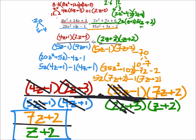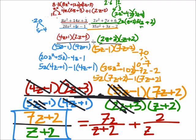So, yeah, so this would split up into 7z over z plus 2. See, there's nothing to really simplify there. And same with the 2, 2 over z plus 2. So, yeah, that doesn't really help us in terms of simplification. In fact, I would say it made it worse.